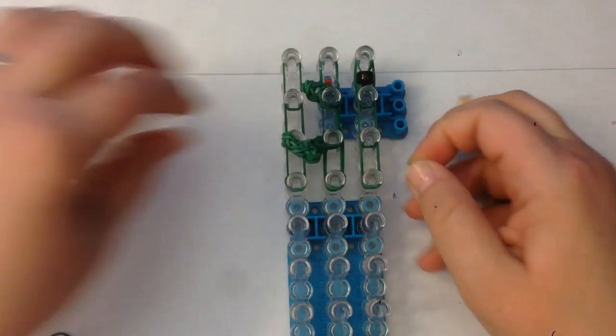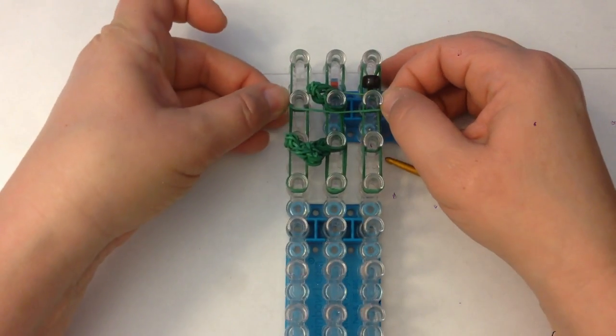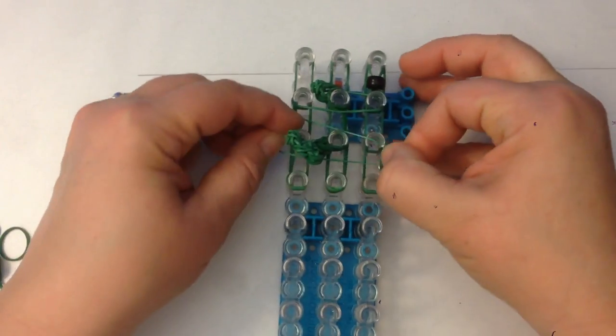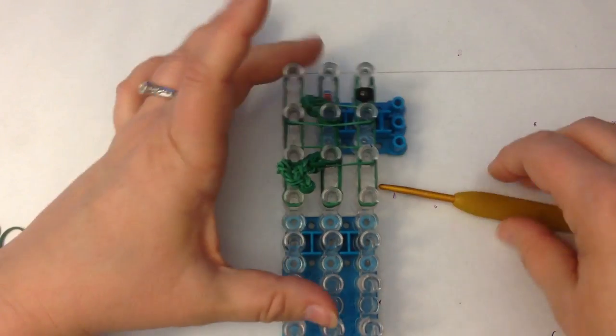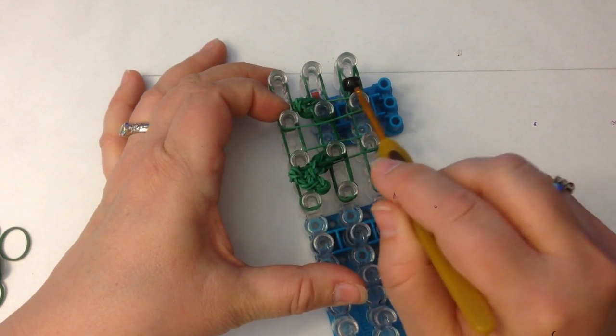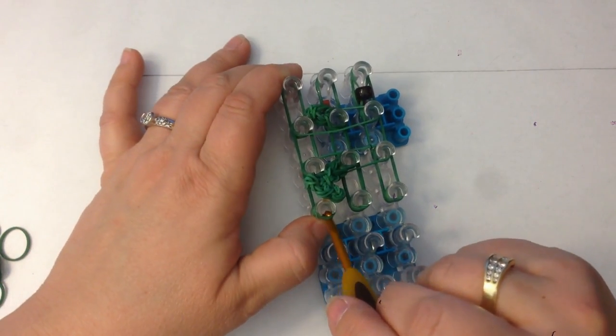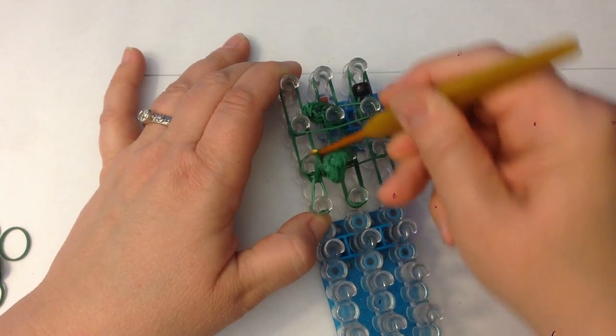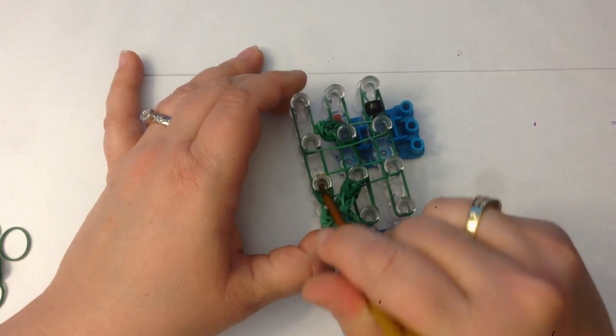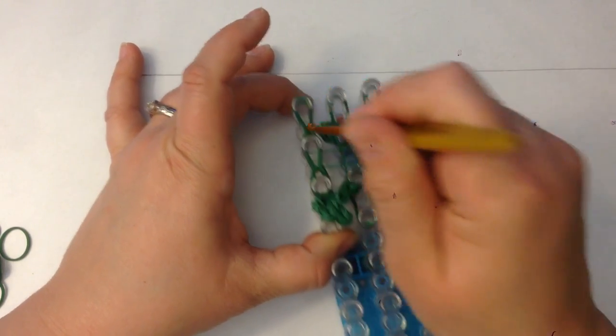And we need crossover bands, which again is a single band and we stretch it over these two columns, these two rows I should say. Like that. Now we're going to loom up column one and column two, not column three. Dig down past your end cap, grab the two bottom green bands and we're looming up to the one above it. Push past the crossover band and grab the two bands and loom up. Same here.